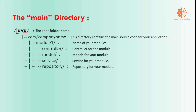Under each module we will have four folders: controller, model, service, and repositories. The controller folder keeps all the controllers related to that module. The model folder keeps all the model Java files for your module. Similarly, services and repositories follow the same pattern. This is the segregation of your code in a modular approach.